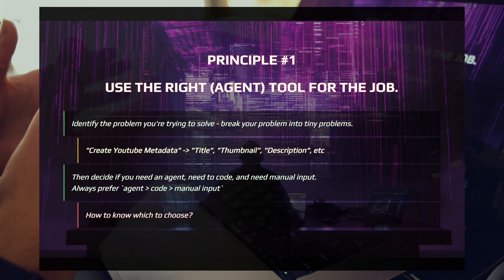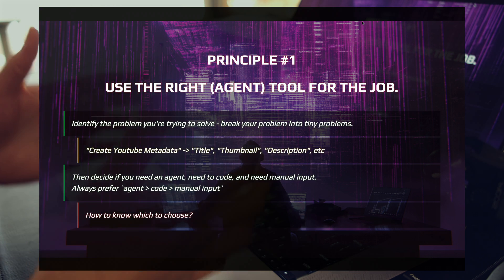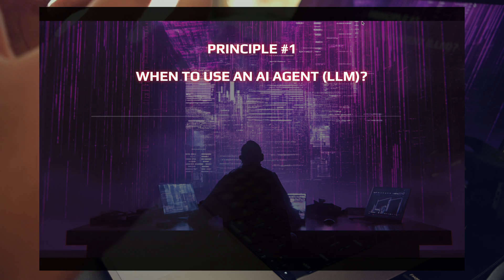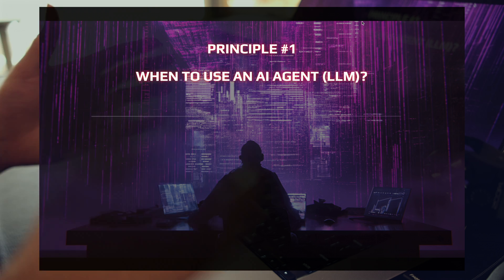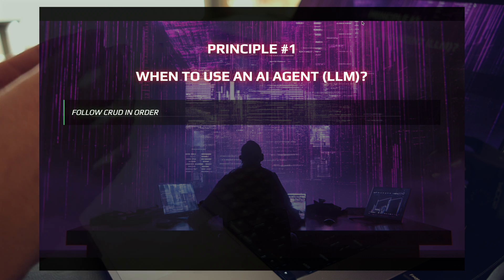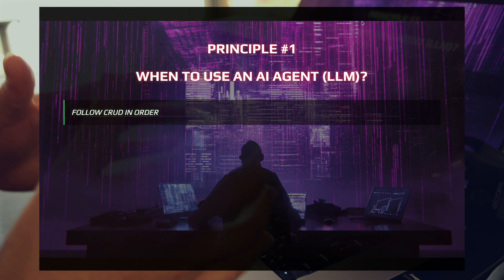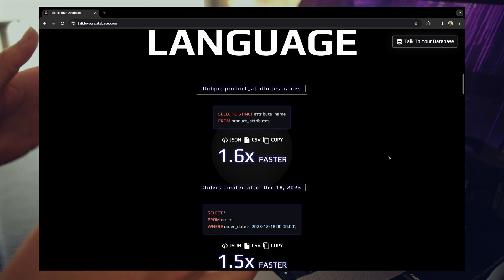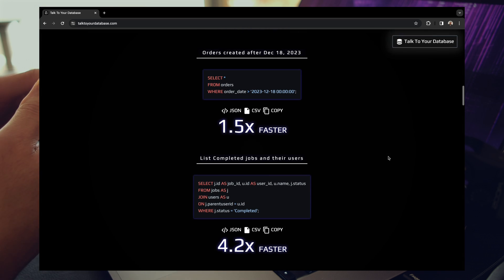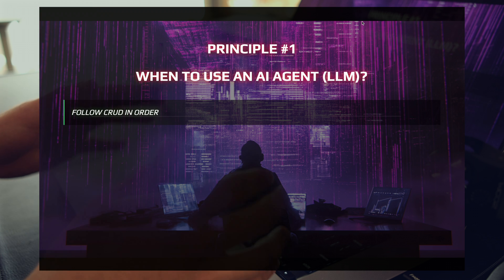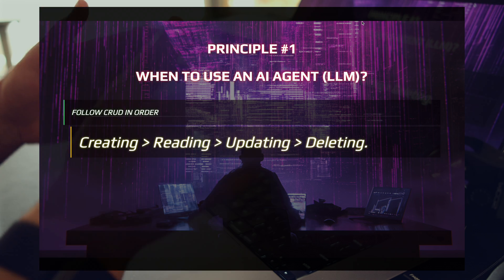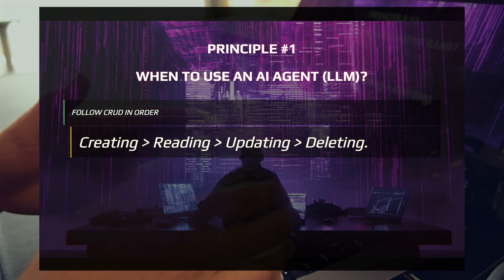This brings up a really important question: how do you know which one to choose? How do you know when you can use an LLM to solve a problem in front of you? A framework I've been using that I think will be really helpful is to follow CRUD in order — this is something I've been utilizing in Talk to Your Database, a text-to-SQL application that just went live this past week. This principle of following CRUD in order: you want your agents to be doing creating and reading over updating and deleting.